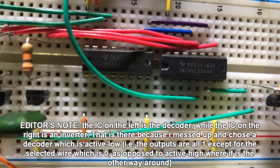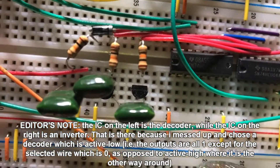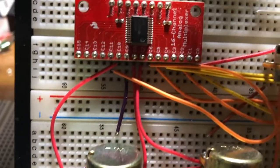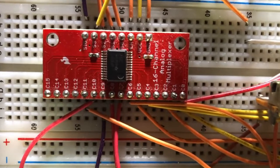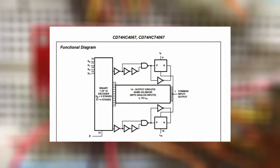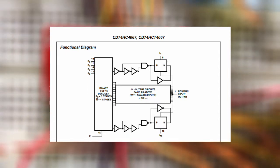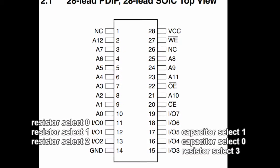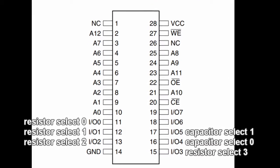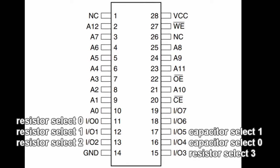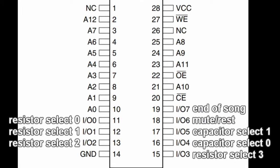I have a 2 to 4 decoder connected to the 3 transistors that control the capacitors. As for the 12 resistors, I am using the 74HC4067, which is a 4 to 16 decoder with a transistor on each output, effectively allowing one resistor at a time to pass through it. These decoders mean the resistors and capacitors only take up 6 wires on the data bus, leaving the 7th and 8th wires for a mute and end marker respectively.